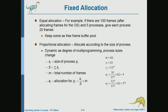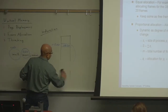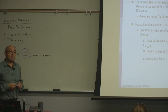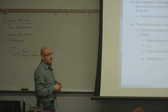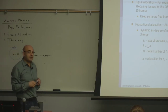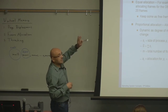Equal allocation is very naive. If you have 100 frames and five processes, just give each process 20 frames. Why isn't this efficient? Not all processes are equal. There is always a difference between equality and justice — people sometimes get these two concepts mixed. Justice is different from equality. If you have a big process, it is not fair to give it the same number of frames as a small process that doesn't need very many. If the operating system is not fair, the performance of the system will suffer.